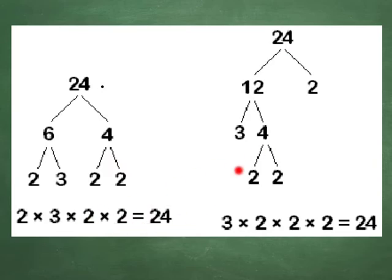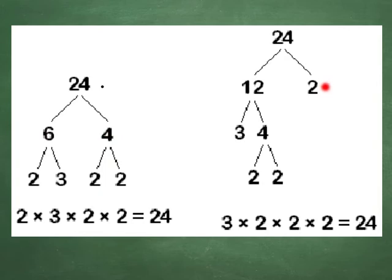It doesn't matter how you do that multiplication — it's going to still break down the same way. You get 2, 3, 2, 2 even though instead of 6 and 4 you said 12 times 2. You still break each one down until you can't go any further and it's all prime numbers.